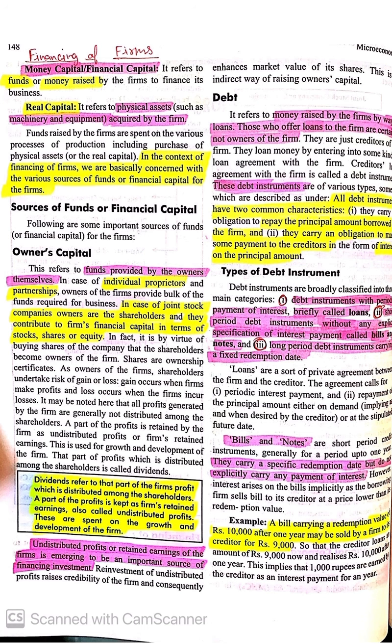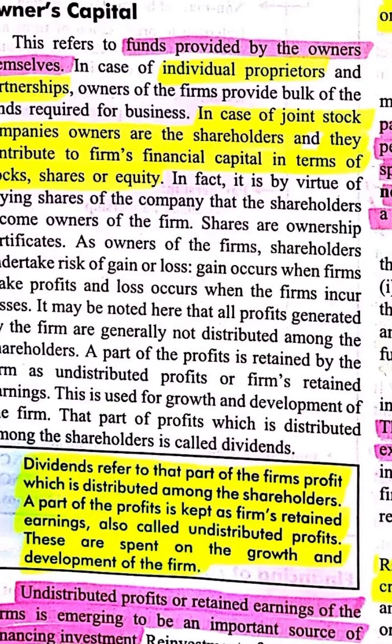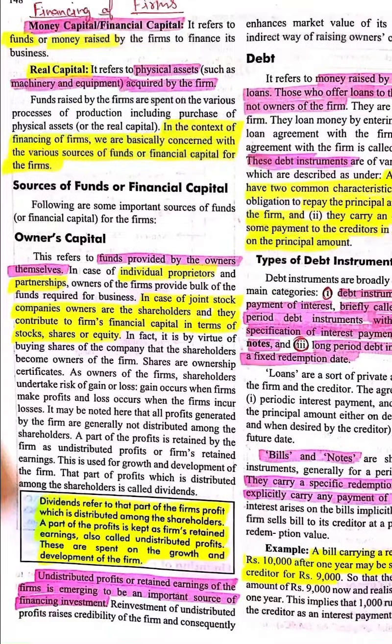Aur unko uske badle mein dividends bhi milte hain. Dividends refer to that part of the firm's profit which is distributed among the shareholders. Jo shareholders ke beech distribute kiye jaate hain profit, wo kehlate hain dividends. Aur doosra jo part hai, wo retained earnings kehlayenge, ya undistributed profits — aur inका istemal further firm ke growth and development ke liye hota hai.